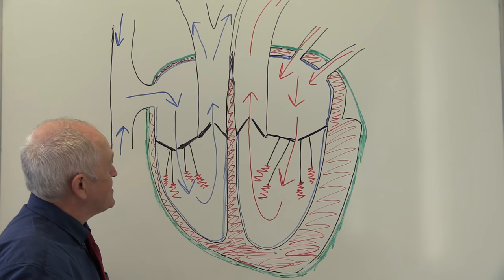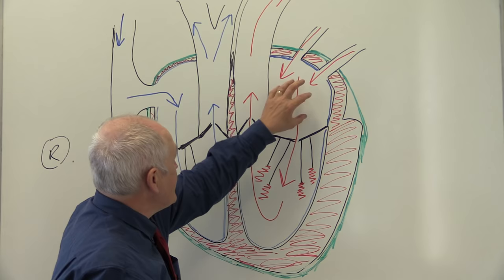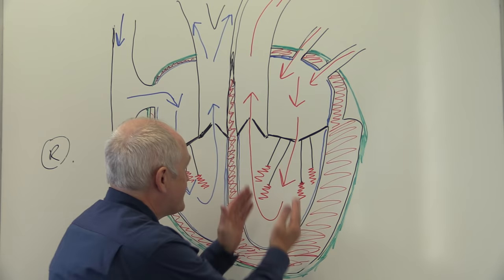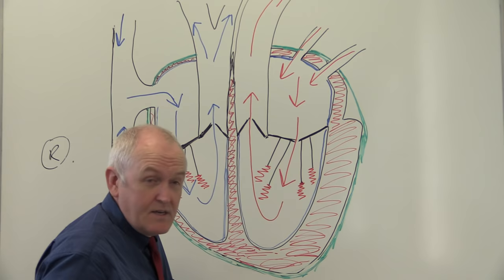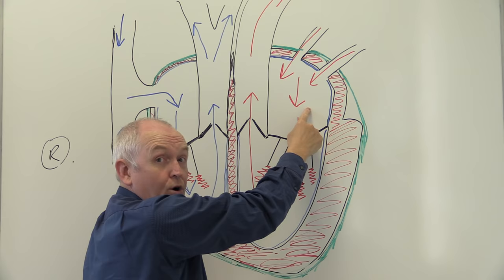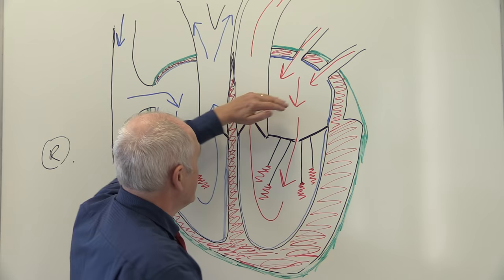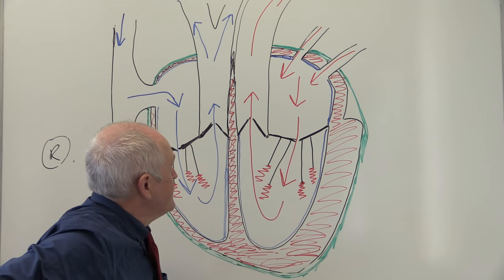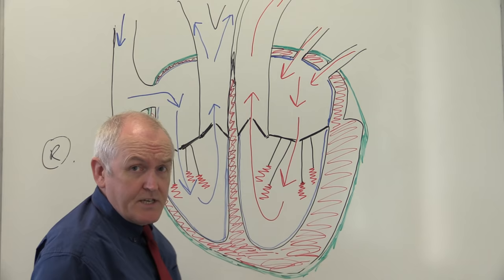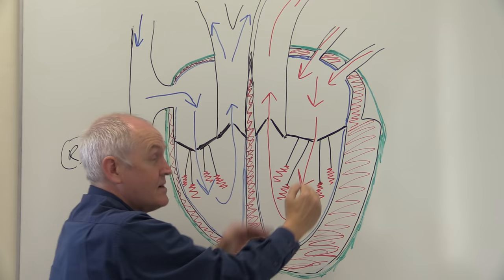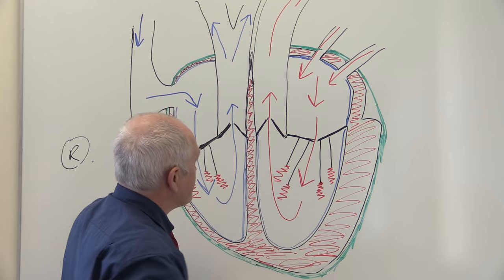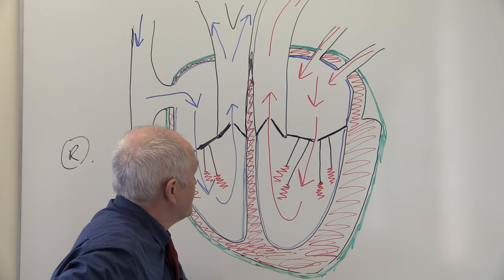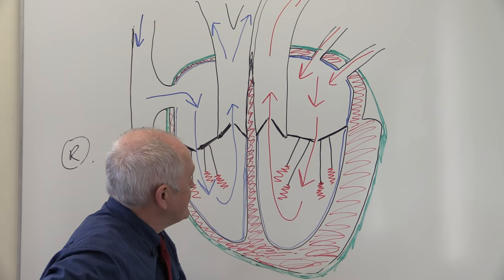Just before the next cardiac cycle begins, there's blood returning in the atria, and what the heart wants to do is fill up the ventricle. At the start of the cardiac cycle, the atria contract forcibly, forcing blood from the lungs through the valve and filling the left ventricle. Approximately two-thirds of the blood just flows straight through passively, and the last third is pushed in by the atria contracting - this effect is called the atrial kick, and it increases the efficiency of the heart.